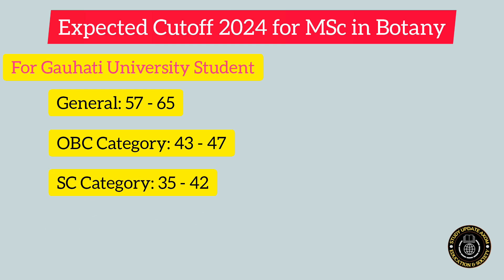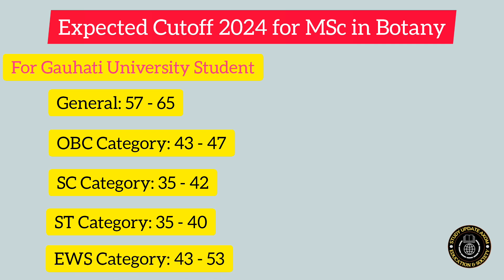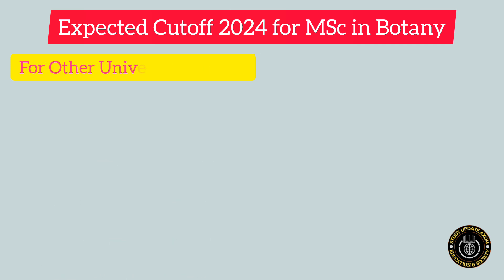For SC category, it may lie between 35 to 42. For ST category, including both types — ST Hills and Plains — the cutoff may lie between 35 to 40. For students who belong to EWS category, the cutoff may lie between 43 to 53.